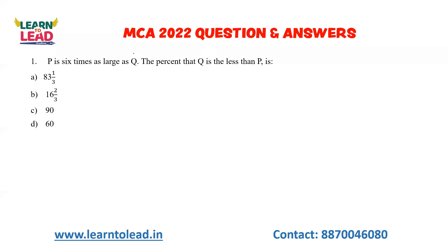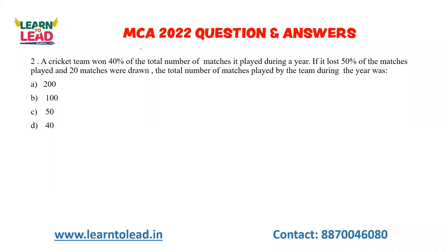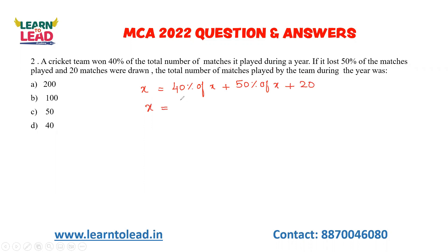We will solve the next question. A cricket team won 40% of the total number of matches it played. If it lost 50% of the matches and 20 matches were withdrawn, find the total number of matches played by the team during the year. So: 40% of X won, 50% of X lost, plus 20 withdrawn. X equals 40% (4/10 of X) plus 50% (5/10 of X) plus 20.